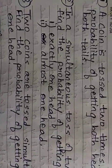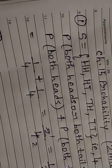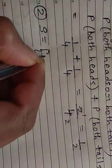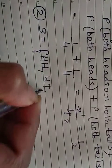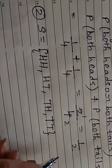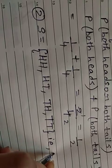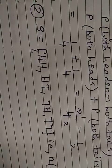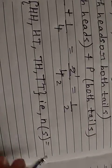Now we will solve first the exactly one head. There are two coins, so the sample space will be: {HH, HT, TH, TT}. The total number of sample space events is equal to four.